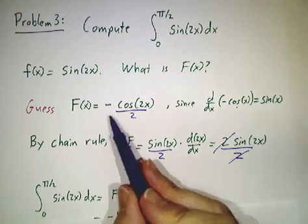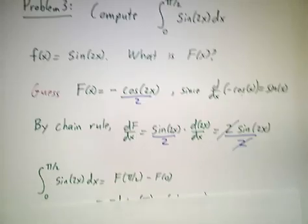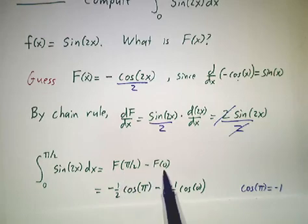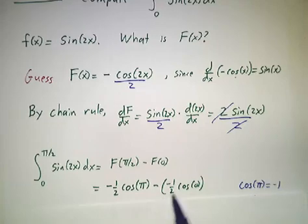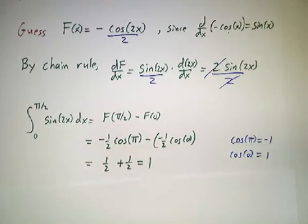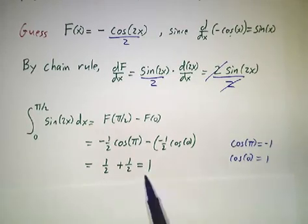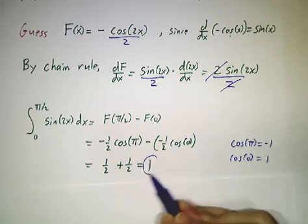So we found our antiderivative, and then we just plug in. F(π/2) minus F(0), so that's -½cos(π) minus (-½cos(0)). The cosine of π is -1, the cosine of 0 is 1. You plug in, you get ½ + ½, and our final answer is 1.